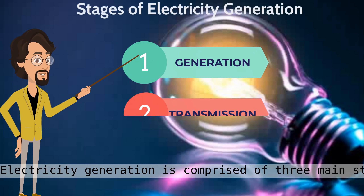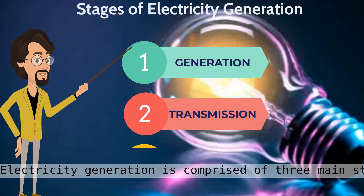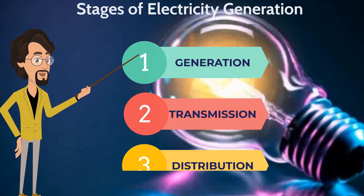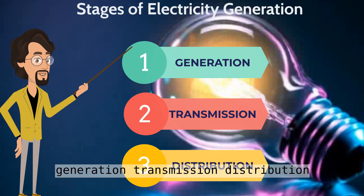Electricity generation is comprised of three main steps: generation, transmission, and distribution.